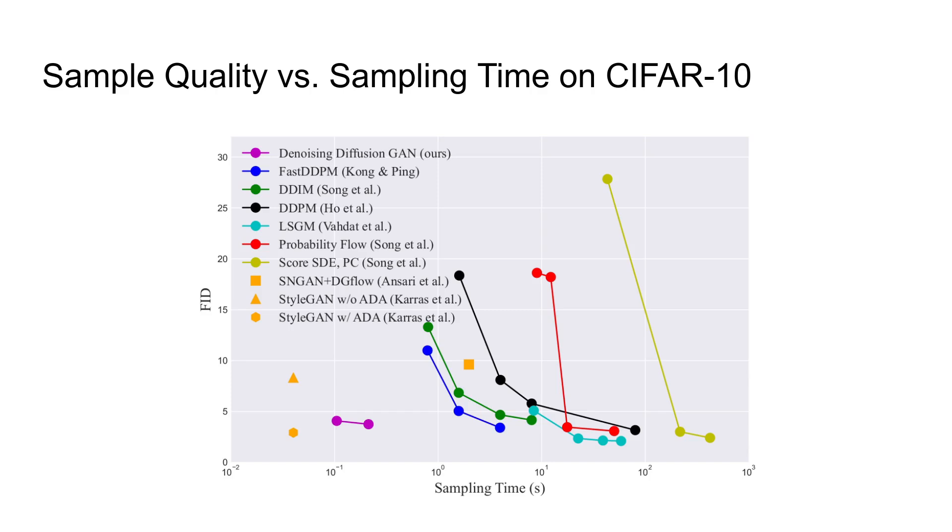When compared to GAN models, StyleGAN is still faster than denoising diffusion GAN. Also the sample quality of StyleGAN seems to be slightly better. This might make it seem like denoising diffusion GAN is inferior to StyleGAN, but the sample diversity of StyleGAN is much more limited.